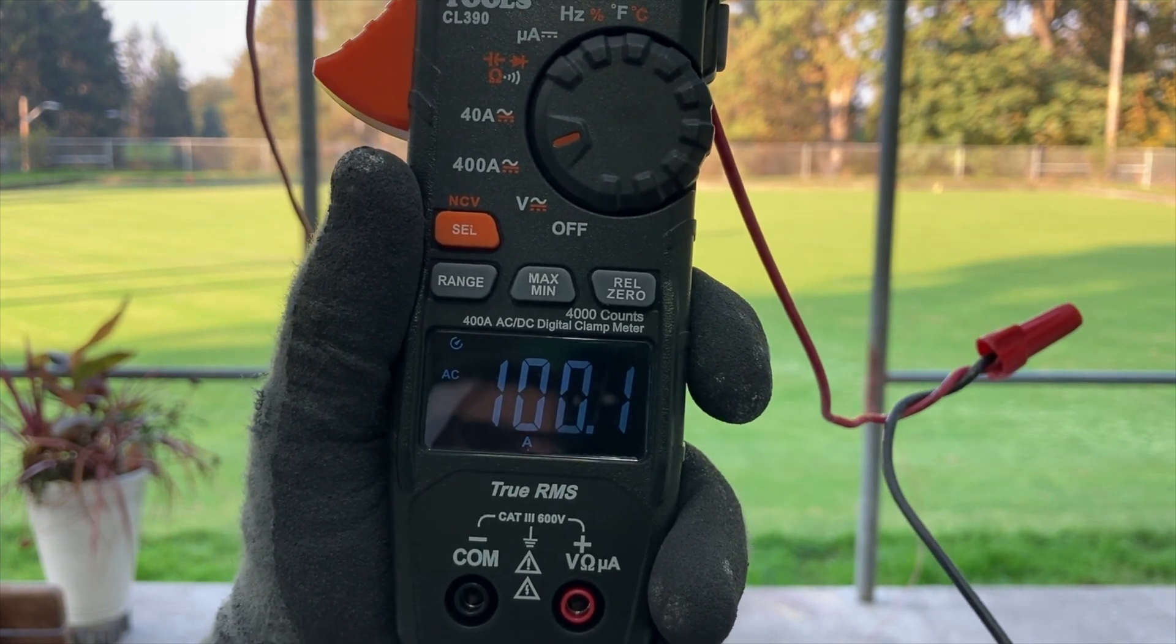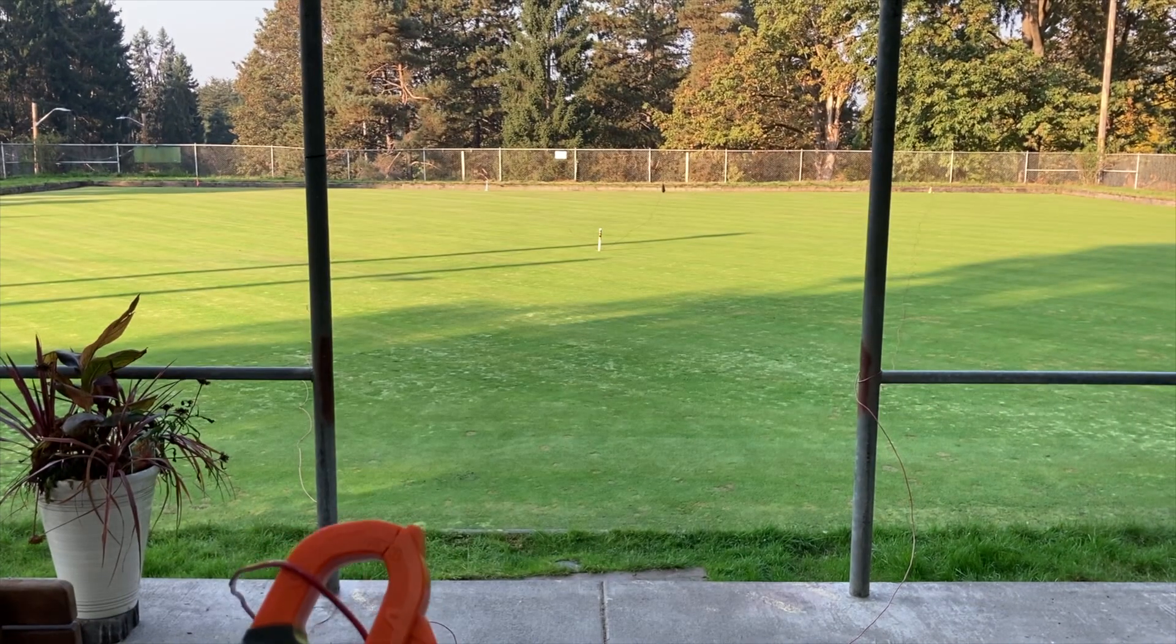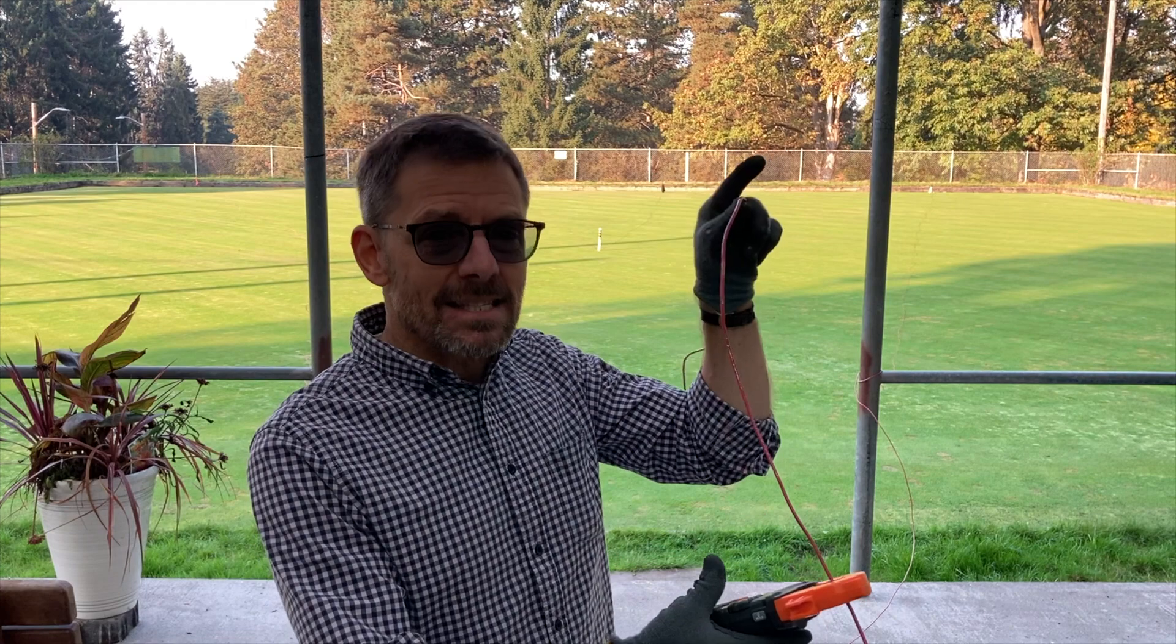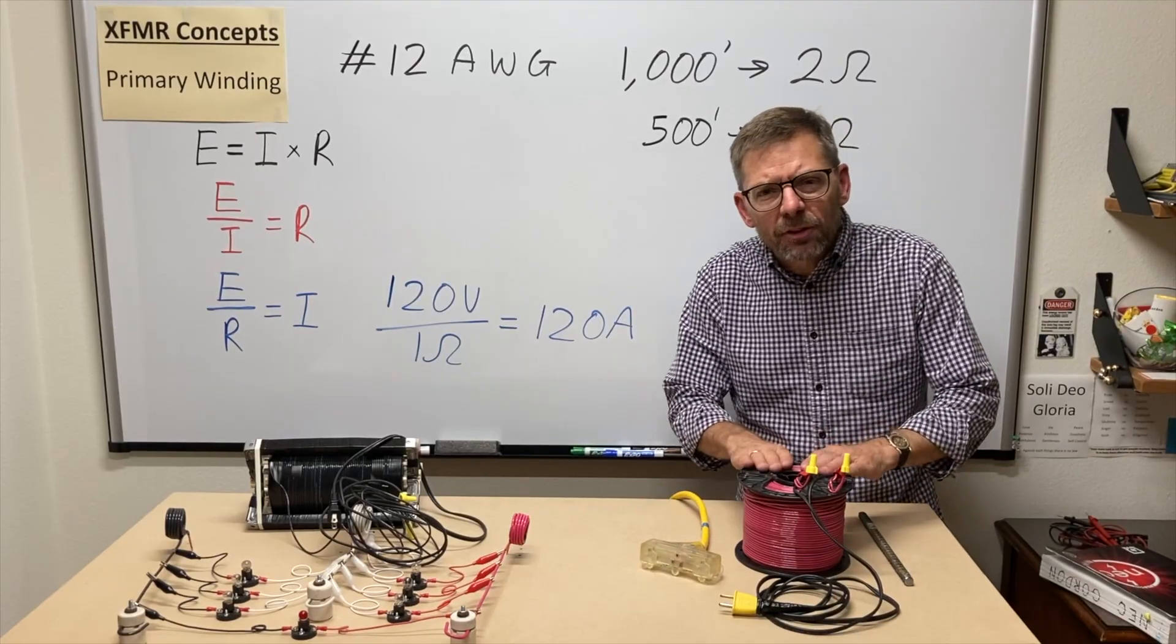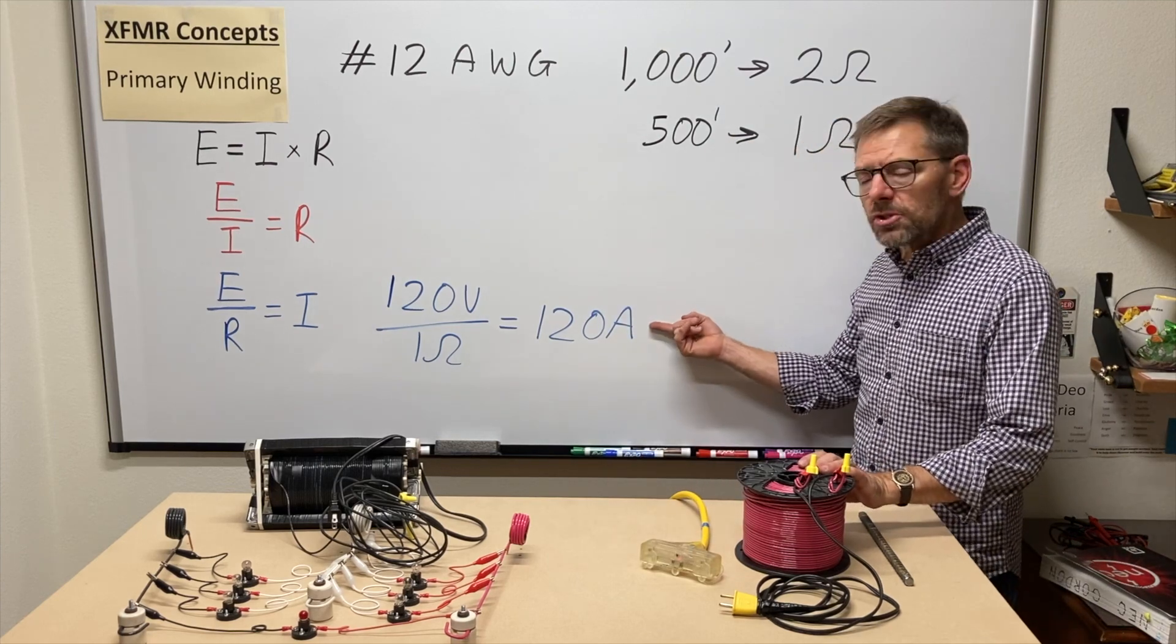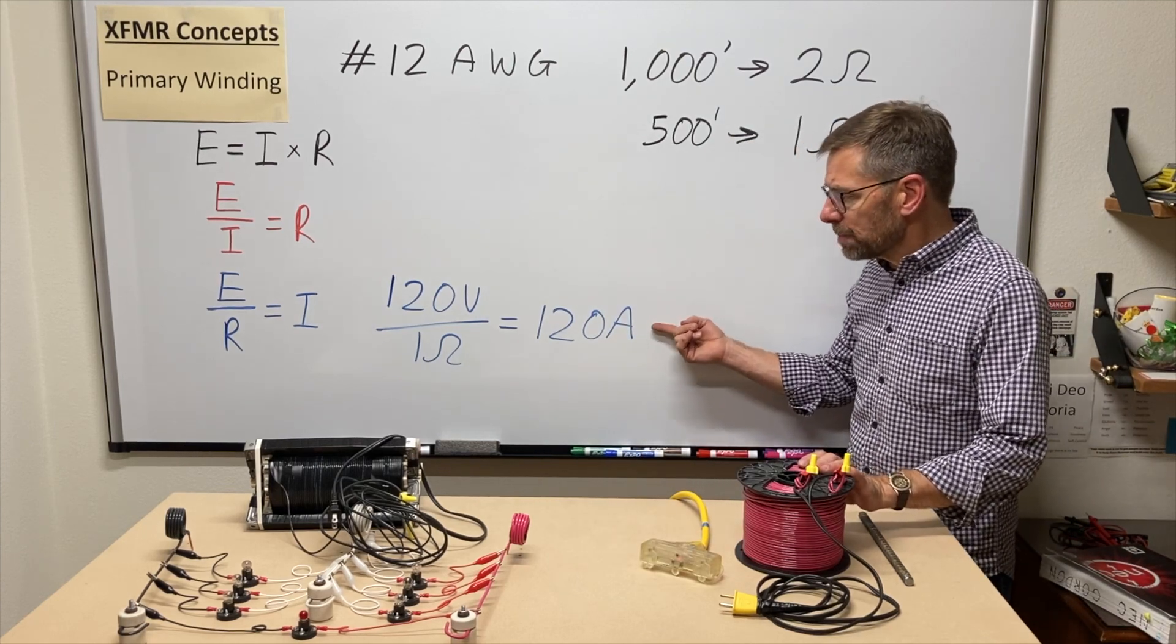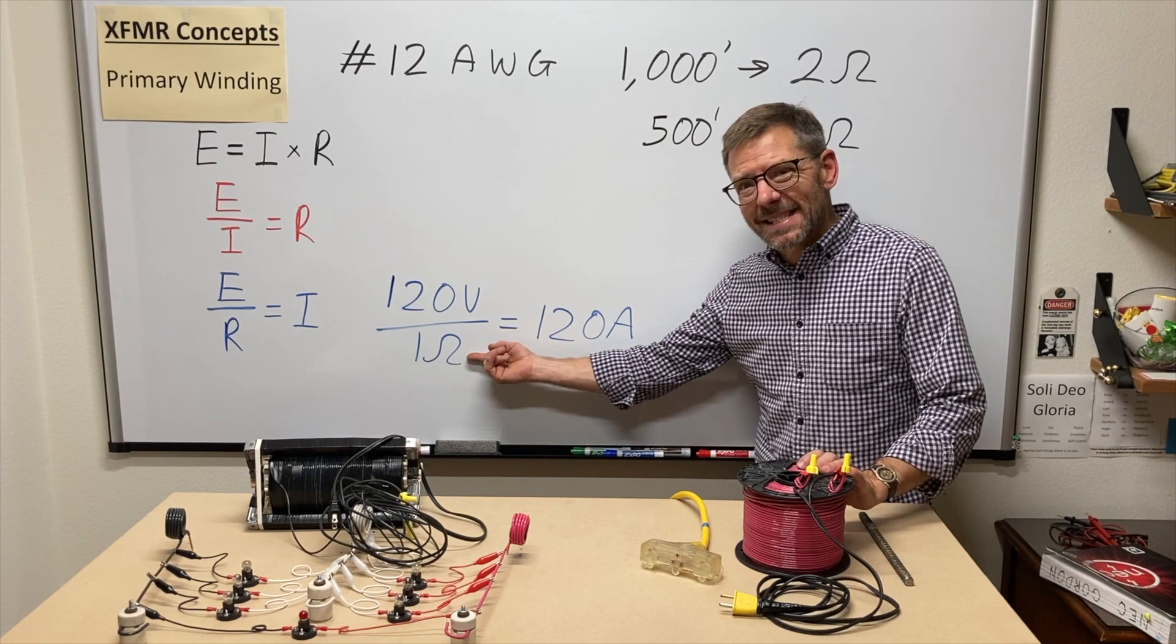My guess is it's because the wire is starting to get hot, so I best turn it off before we do any damage. But there we got more what we were expecting for current flow based on the resistance of the wire. Once we got the wire off the coil and all spread out, we got close to the 120 amps that we would expect from one ohm of resistance.